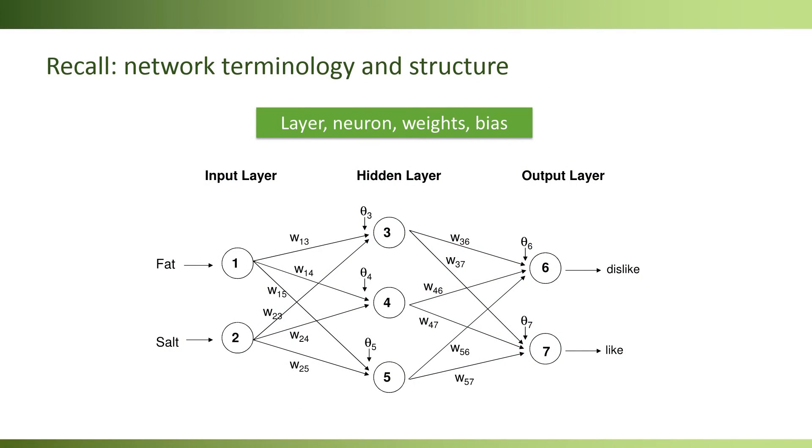In the earlier videos, we introduced the terminology used to describe a neural network. Specifically, we have an input, an output, and hidden layers. Each one of these layers include neurons, which connect all the neurons in the previous layer.